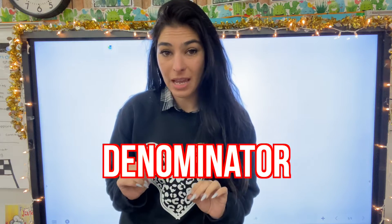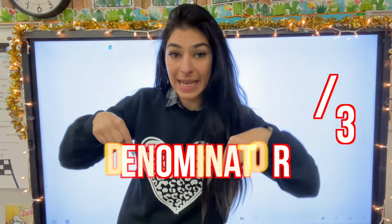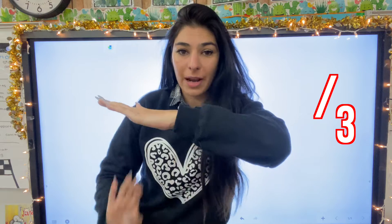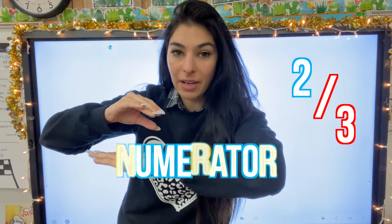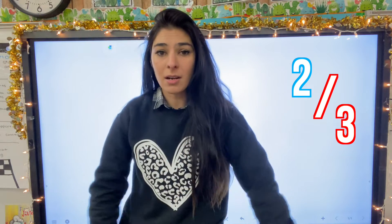Before I get started, there's a couple vocabulary words I want you to be familiar with. First one is the denominator. Denominator means down. It's the number that is underneath the fraction line. And then the number on top is called the numerator. So we have the denominator and the numerator.